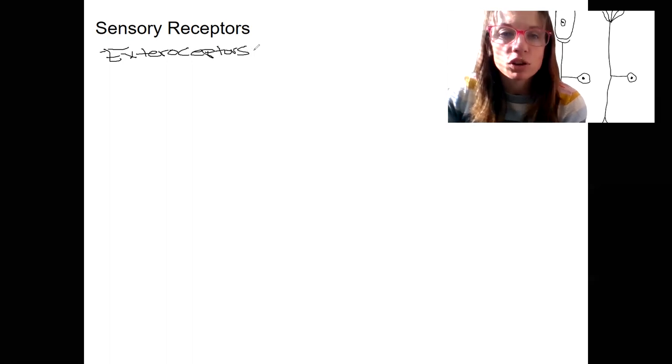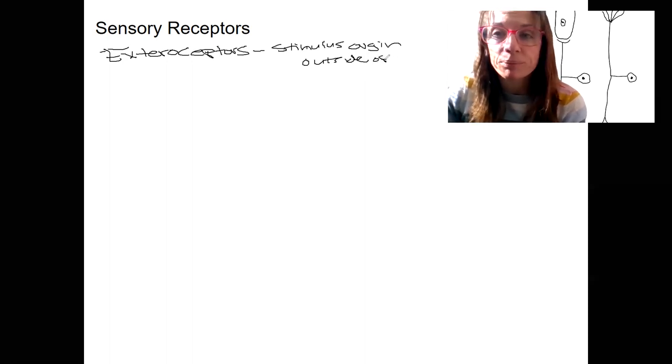So the stimulus is outside of the body. The stimulus origin is what this is referring to here. So most of what we'll talk about will be these type of receptors: light, sound, taste, smell, and touch, right? So external touch.